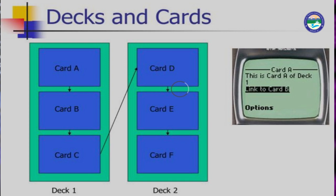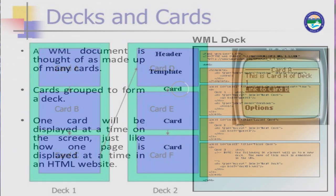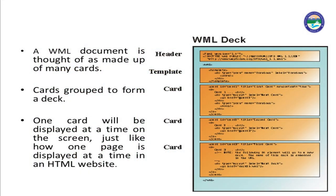The different pieces of code are called different cards, and the combination of these cards is called a WML deck. A WML document is made up of many cards, and cards grouped together form a deck. One card will be displayed at a time on the screen, just like how one page is displayed at a time in an HTML website. So one card is equivalent to one page on the mobile phone.